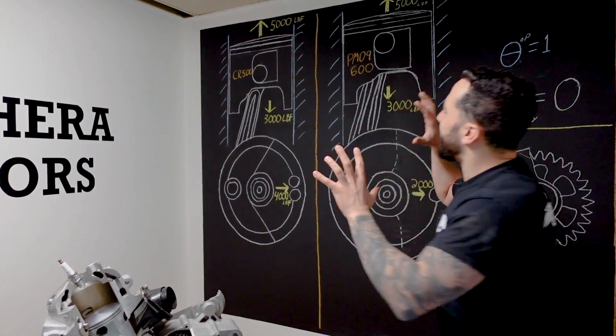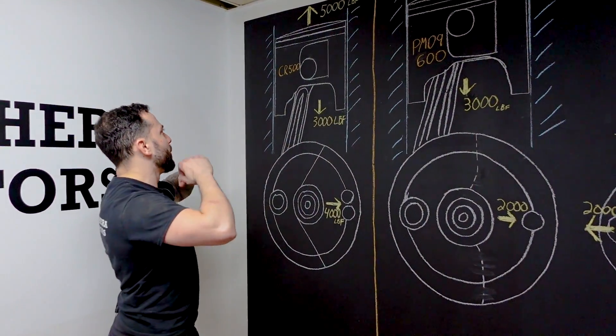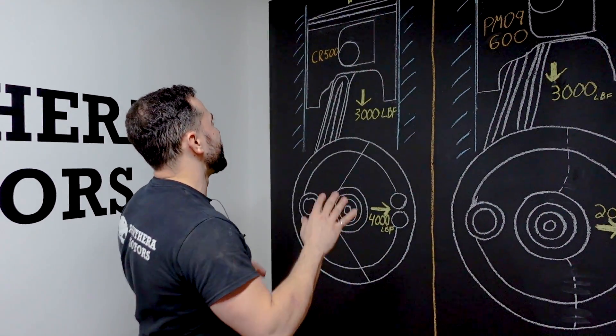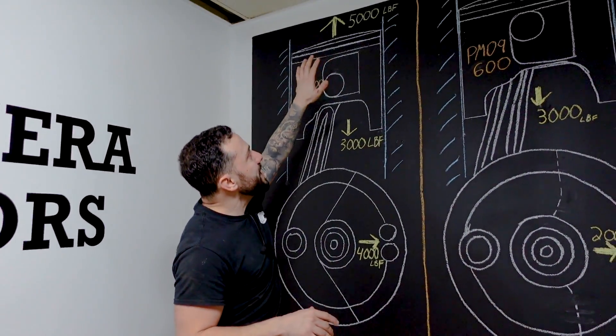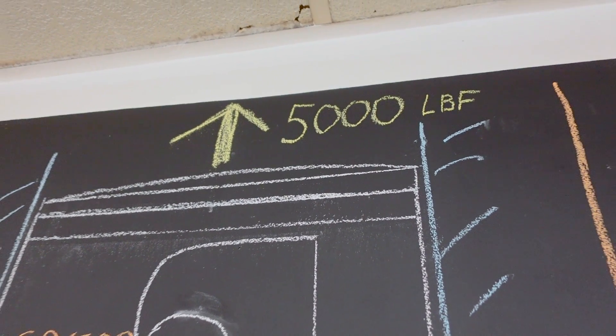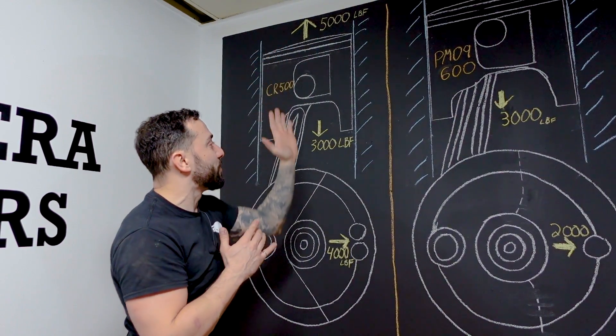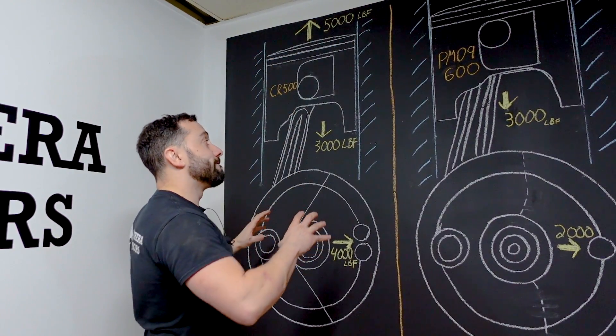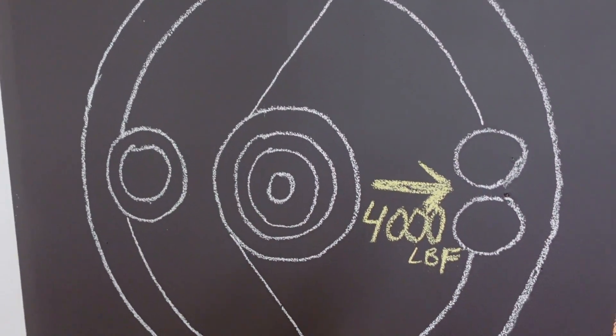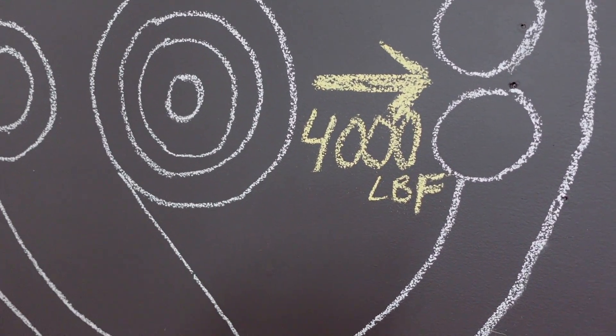Let's suppose we have a CR500 engine going max RPM, 7,000, 8,000 RPM, whatever. We're going to be having approximately 5,000 pounds of force up when the piston re-accelerates at top dead center versus approximately 3,000 pounds of force at bottom dead center when the piston starts going back up.